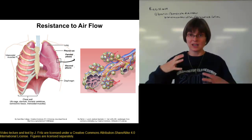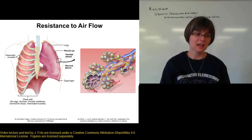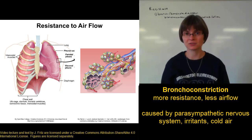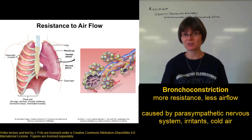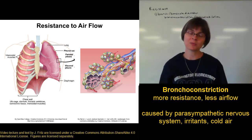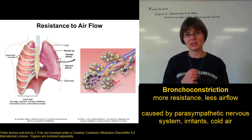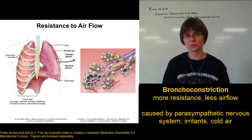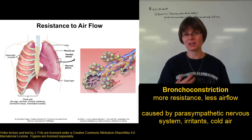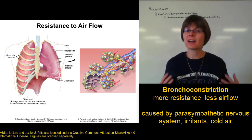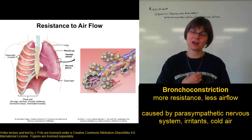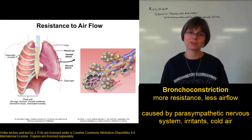Bronchoconstriction — contraction of those smooth muscles — can be caused by a number of factors, including the parasympathetic nervous system. The parasympathetic nervous system helps you rest and digest. When you're resting and don't need a large amount of air flow, we constrict the bronchi and bronchioles, which reduces the amount of dead space — the air in the bronchi and bronchioles that can't exchange oxygen. Only air in the alveoli can exchange oxygen, so constriction gets more air down to the alveoli.